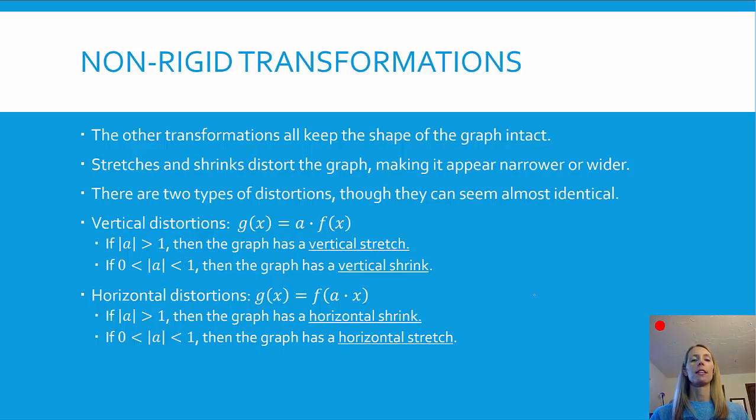So vertical distortions, that's when we have a multiplier to the function itself. We call it a vertical stretch if the absolute value of a... I say the absolute value of a, just because the negative does something else that determines if there's a reflection or not. We just are focused on the coefficient without its sign.